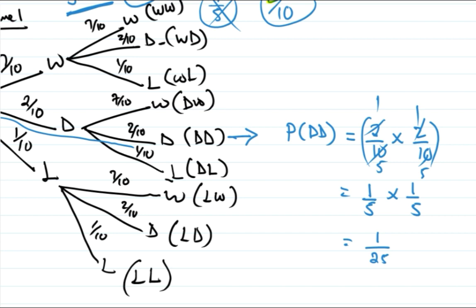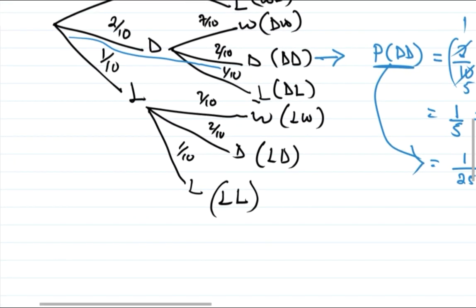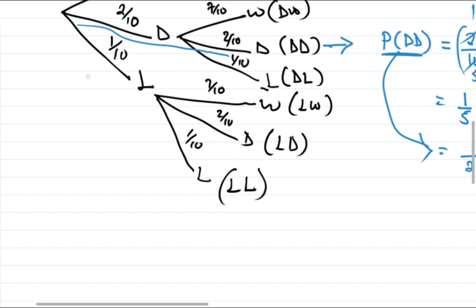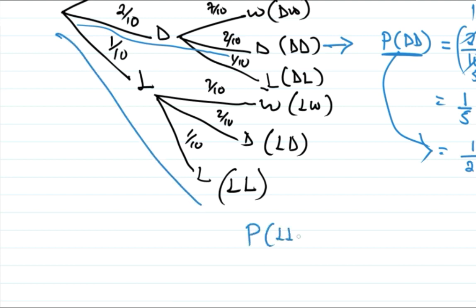So the probability of drawing both games is 1 over 25. Now what about losing both games? We take the LL branch. P(LL) is 1 over 10 times 1 over 10, which gives 1 over 100.